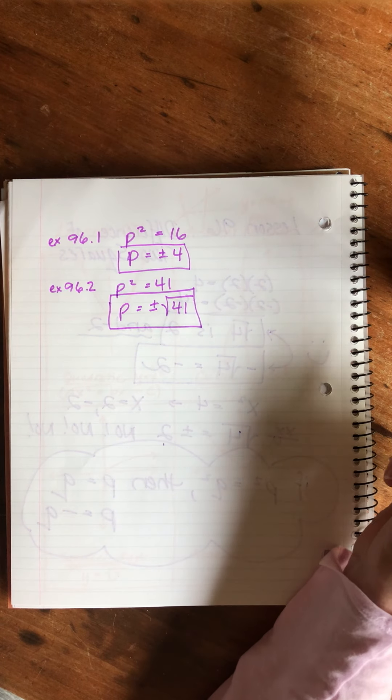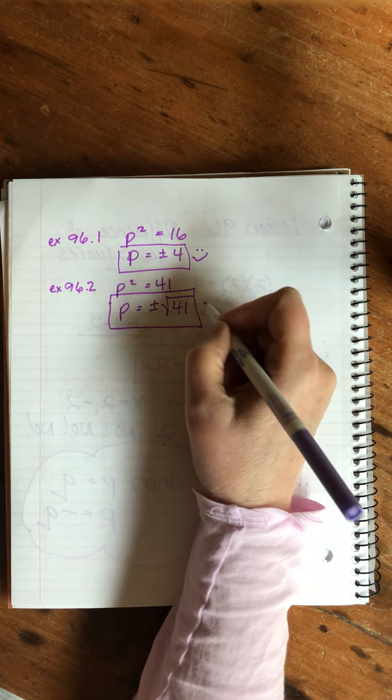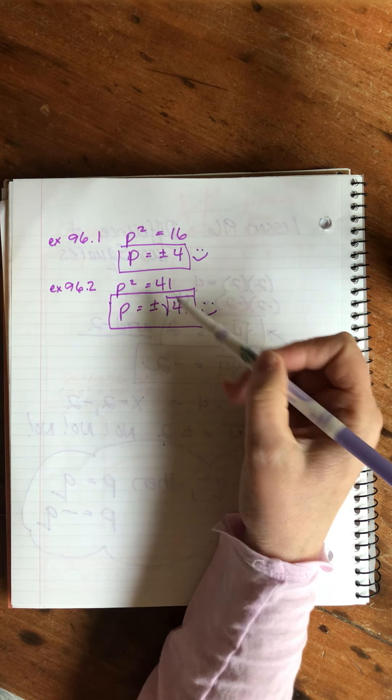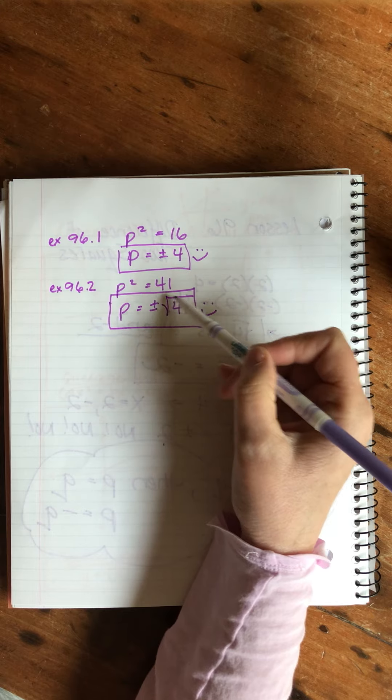We don't know what that number is in a specific sense, but we can just write the square root of it in that form. If it's a perfect square we write what the root is. If it's not a perfect square we just write it with the symbol.